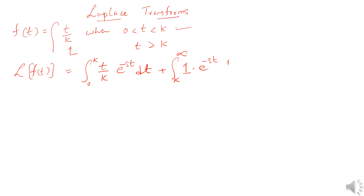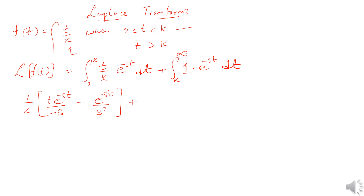Now we integrate, taking 1/k outside. Applying integration by parts, we get: t times e to the power negative st over negative s, minus e to the power negative st over s squared, evaluated from 0 to k, plus e to the power negative st over negative s evaluated from k to infinity.